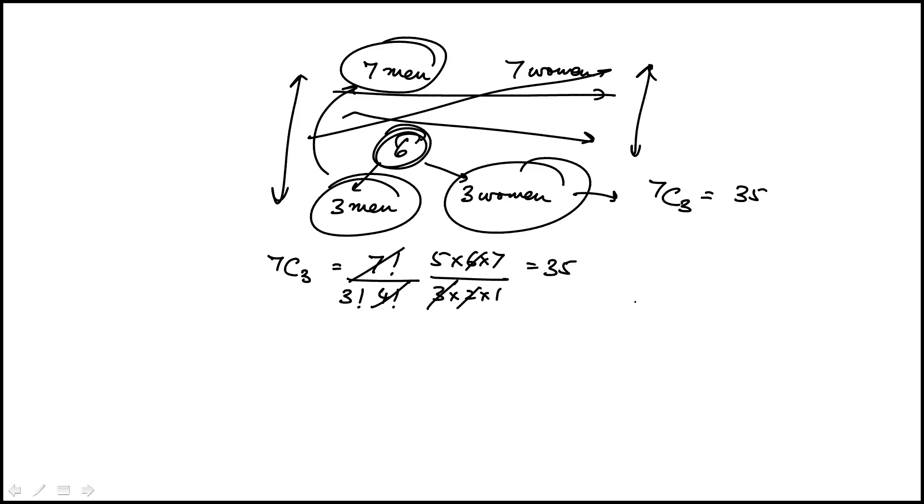So this is where you apply the basic counting principle that the total number of ways would just be 35 times 35, which in the answer choices they've written it in that form, choice D.